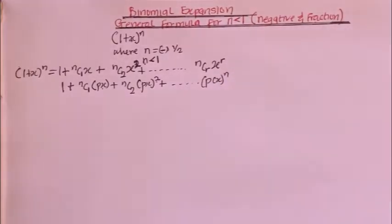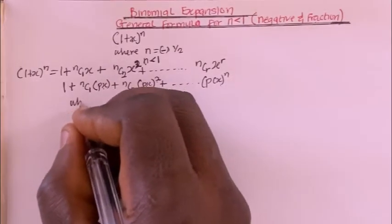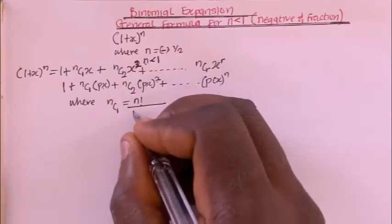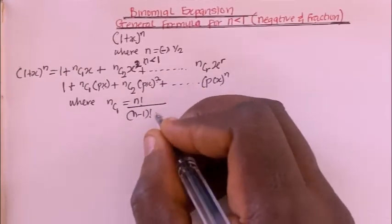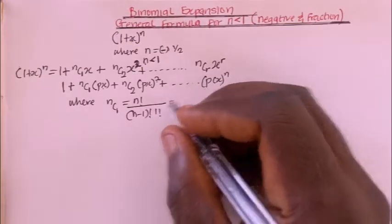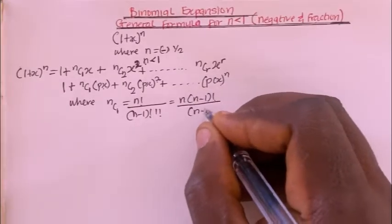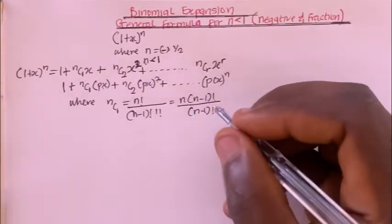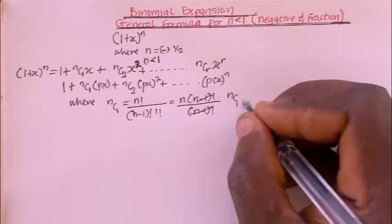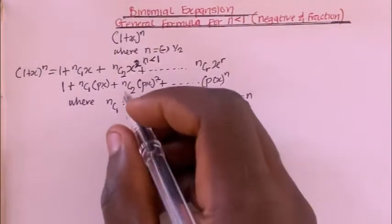Now nC1 is the same as n factorial divided by (n−1)! times 1!, which simplifies to n times (n−1)! divided by (n−1)! times 1, which equals n. So nC1 equals n.